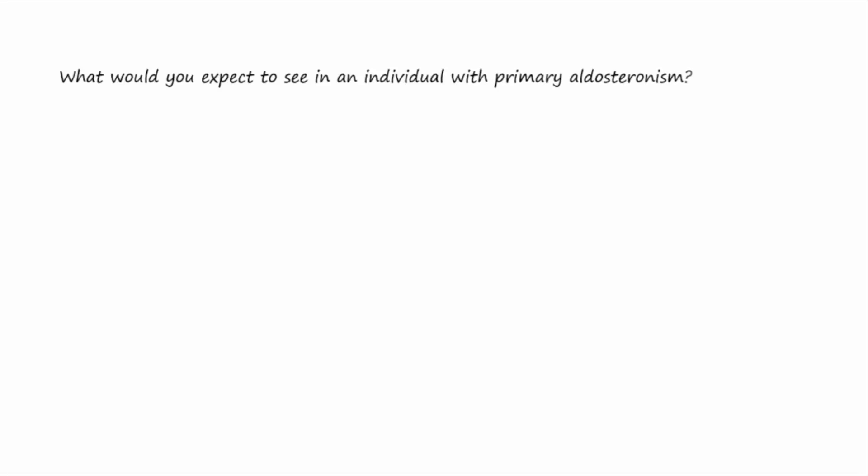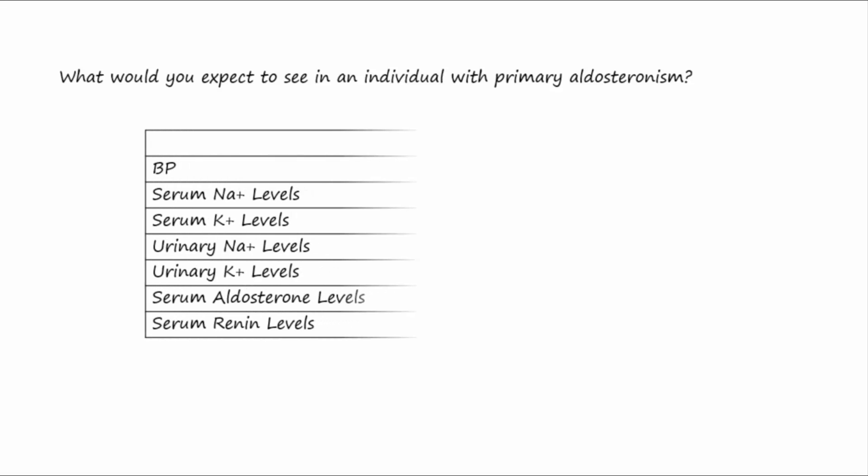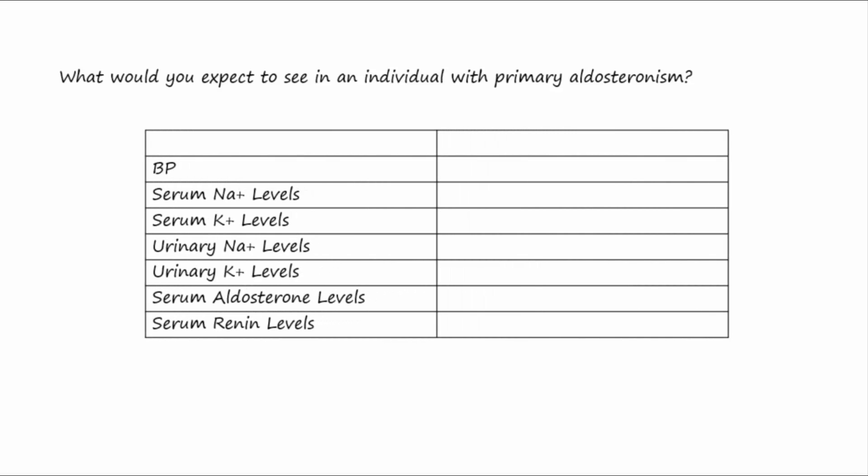What would you expect to see in an individual with primary aldosteronism? Looking at the chart below, use arrows to describe what would increase or decrease. Pause the video now and then resume it once you have determined your answers.